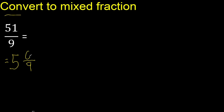Here it can be simplified because it can be divided by the same number. Divided by 3: 6 divided by 3 is 2, and 9 divided by 3 is 3. Finish.